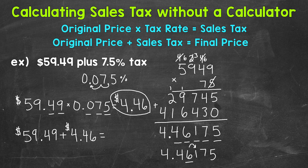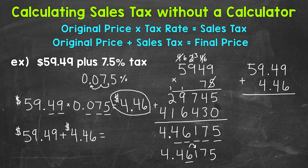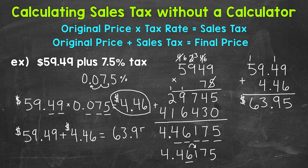Let's go to the right and add these. When adding decimals, we need to line up our decimals. So we have 59.49 and 4.46. Lining up those decimals will line up all of our places. Let's add the hundredths first: 9 plus 6 is 15. 1 plus 4 is 5, plus 4 is 9. Bring our decimal straight down — it's lined up throughout the entire problem. 9 plus 4 is 13. And then 1 plus 5 gives us 6. So we get $63.95 for our total cost — that final price with sales tax included.